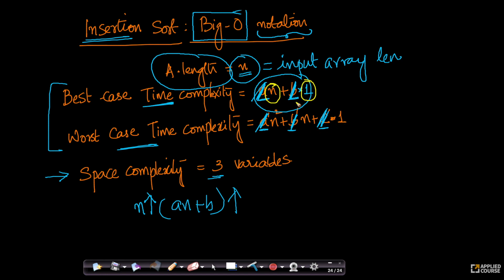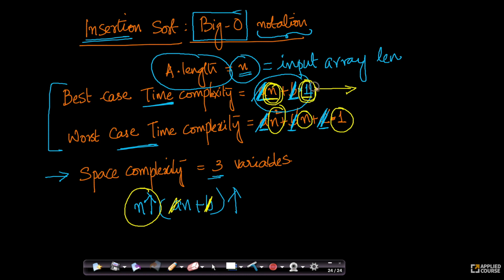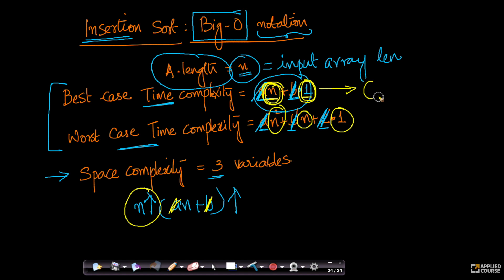If I ignore the constants, I'm left with n², n, and 1. Of these, as n increases, 1 is a constant — it does not change. n will increase as the input size increases. But n² will increase much more. So, of the three terms, n² is increasing the most, and we write the best case as order of n.